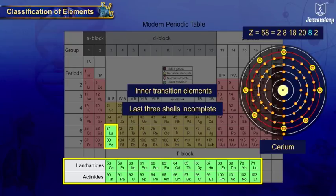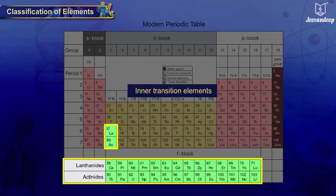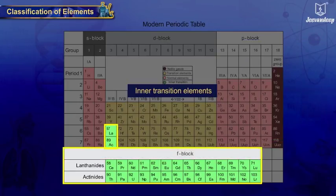The fifth shell is incomplete with eight electrons as it can contain 50 electrons, and the sixth shell is also incomplete with two electrons, as the outermost shell can contain eight electrons. This is the f-block — the group of inner transition elements.